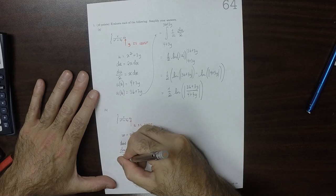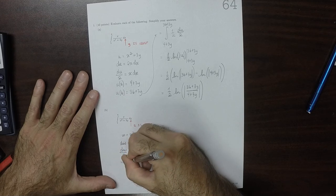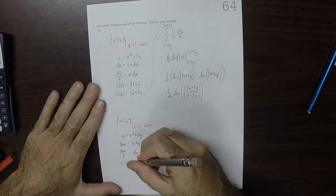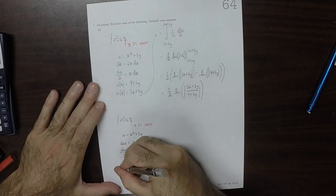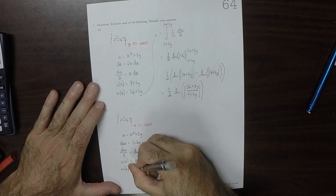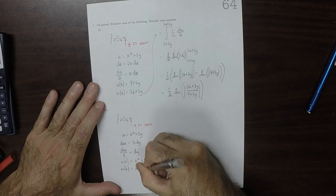So w evaluated at 2, that is to say at y is 2, is x squared plus 6. And w evaluated at 6 is x squared plus 18.